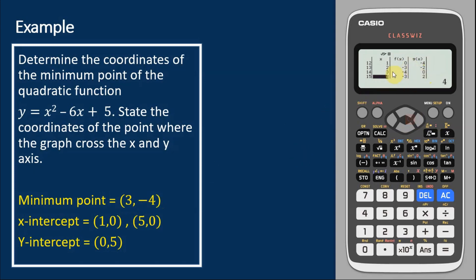The table also allows us to check the x-intercept and y-intercept. For the x-intercept, y = 0, and f(x) is the y. So when y = 0, x = 1 — yes, this is one of the x-intercepts. Scrolling down more, we have another x-intercept: when y = 0, x = 5. This is our second x-intercept. So we can check both the coordinates of the minimum point and the coordinates of the x-intercepts.